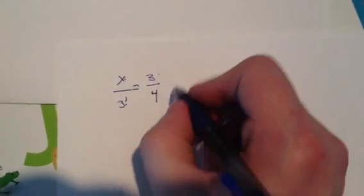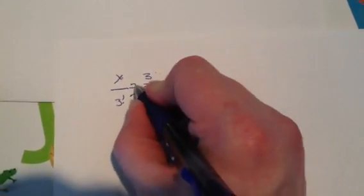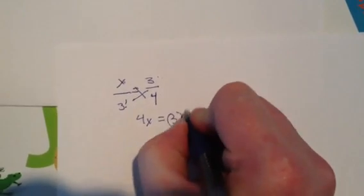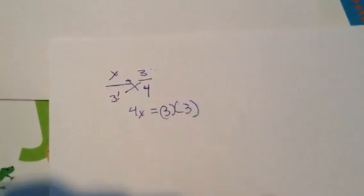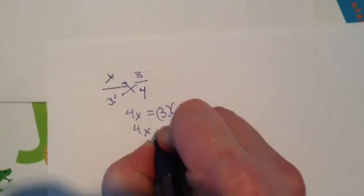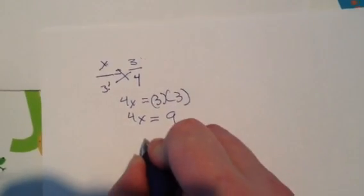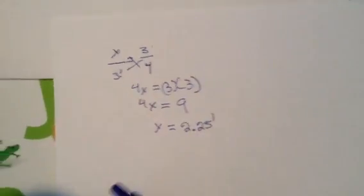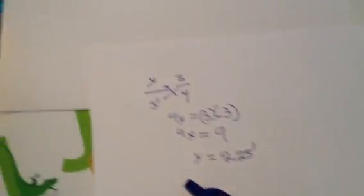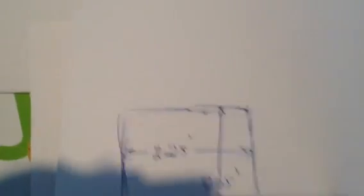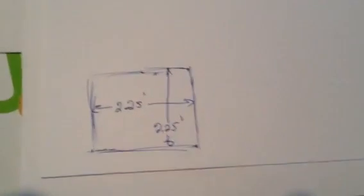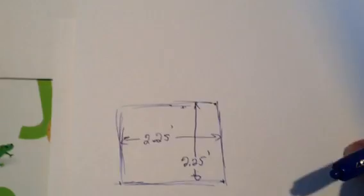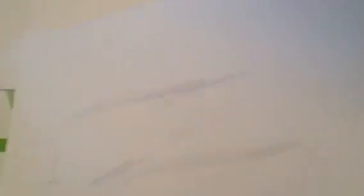That's going to give me four X is equal to three times three, or four X is equal to nine. That's going to give me X is equal to 2.25 inches. So my next layer back is going to be 2.25 inches by 2.25 inches.